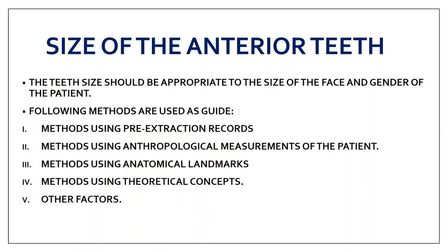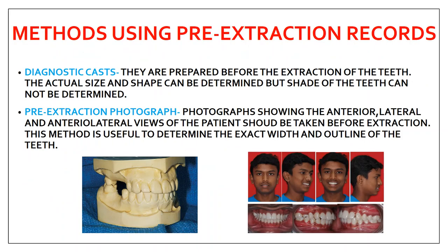The methods used to determine the size of anterior teeth are: methods using pre-extraction records, methods using anthropological measurements, methods using anatomical landmarks, methods using theoretical concepts, and other factors. For pre-extraction records, you save information and use the tooth size the patient had before extraction. The first is the diagnostic cast — taken before extraction, showing the patient's natural teeth, allowing direct measurement of tooth size.